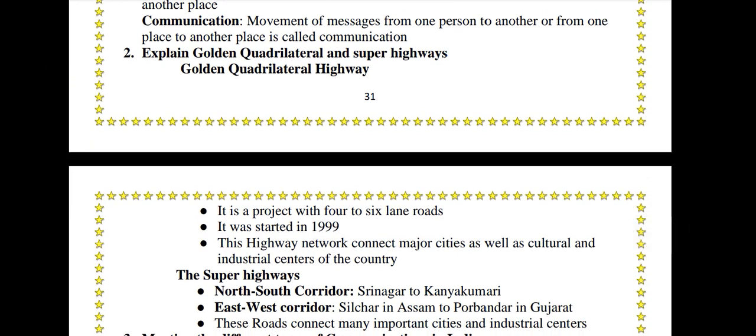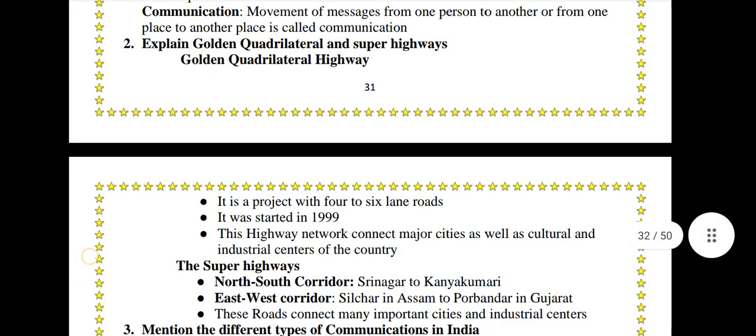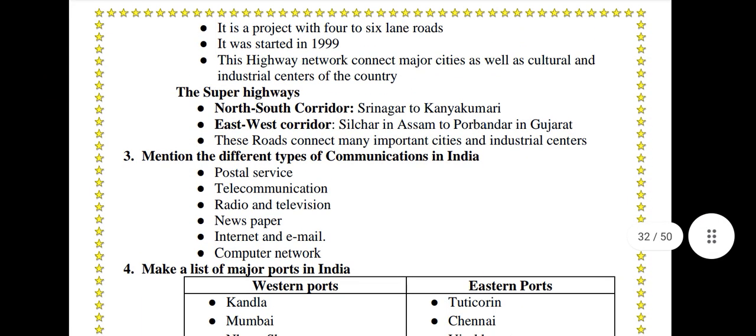Explain the Golden Quadrilateral and Super Highways. Golden Quadrilateral Highway is a project with 4 to 6 lane roads. It was started in 1999. This highway network connects major cities as well as cultural and industrial centers of the country. The Super Highways include the North-South Corridor from Srinagar to Kanyakumari, and the East-West Corridor from Silchar in Assam to Porbandar in Gujarat. These roads connect many important cities and industrial centers.